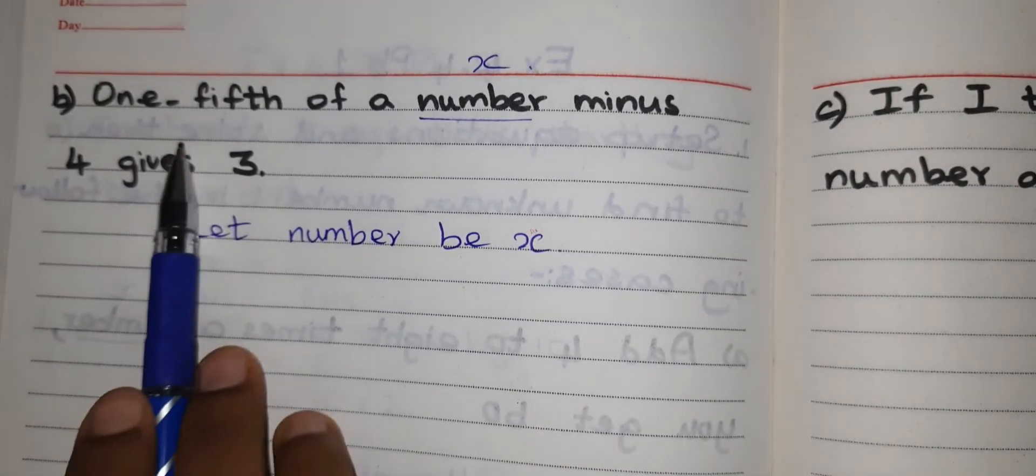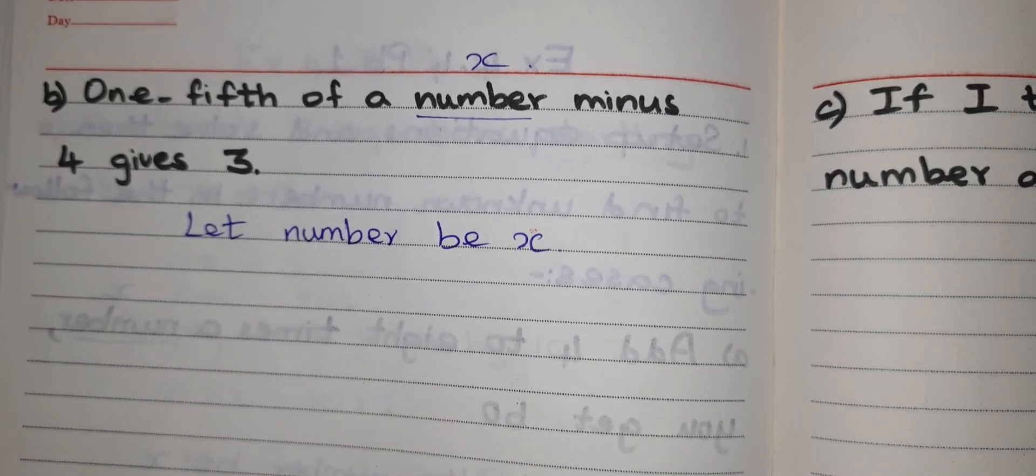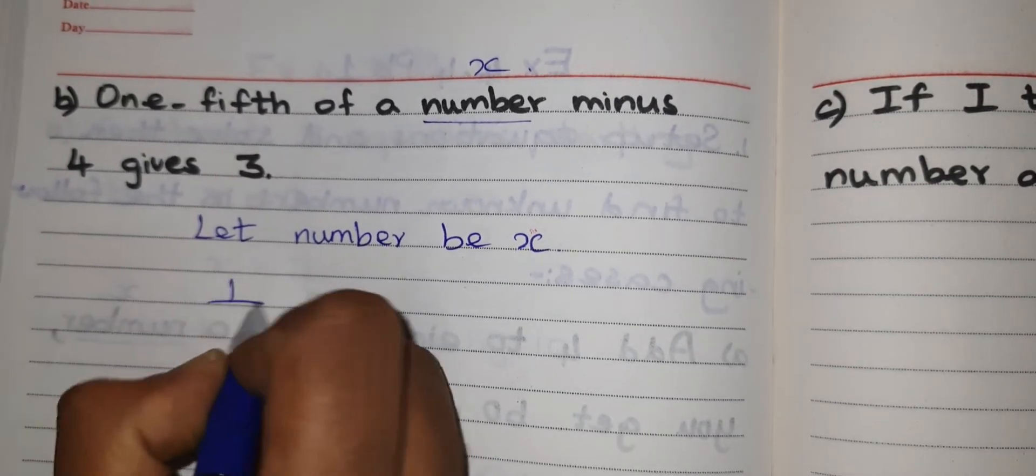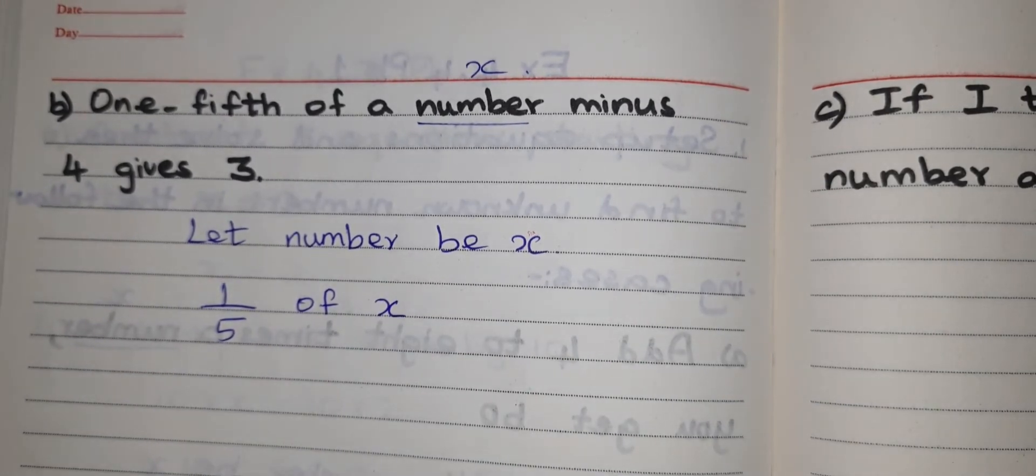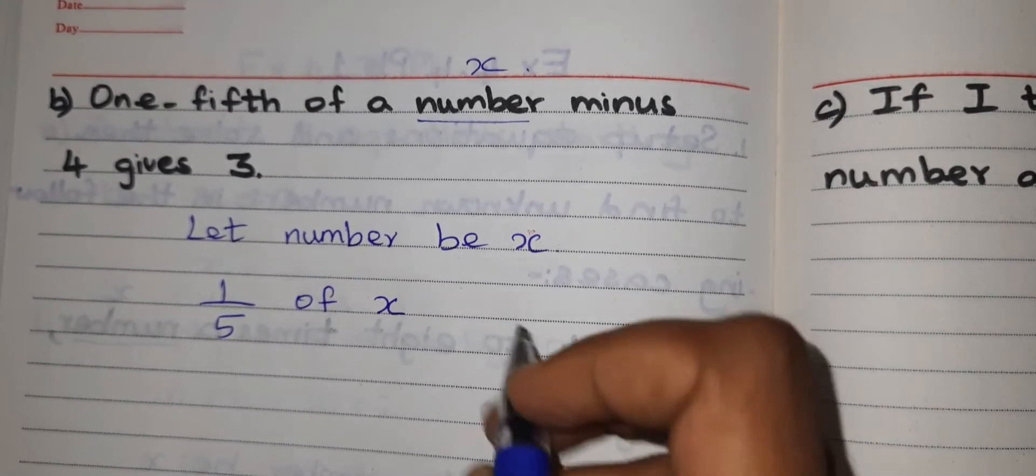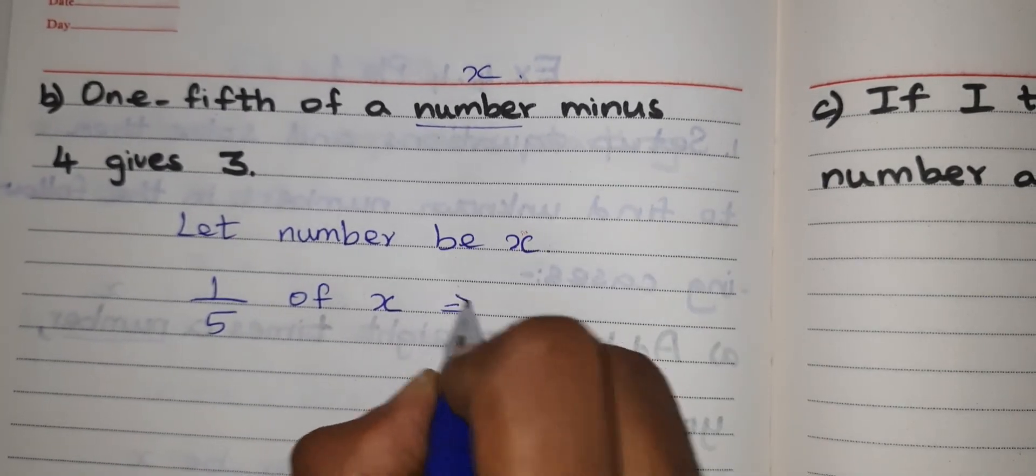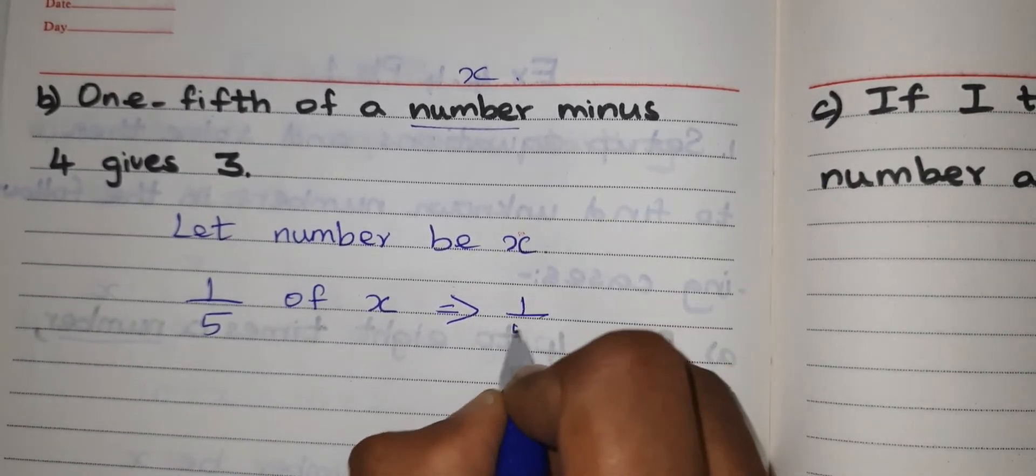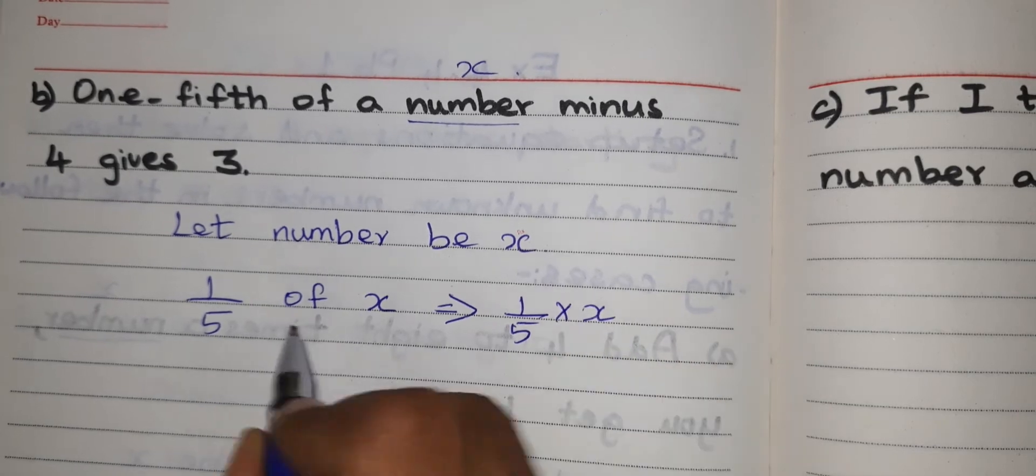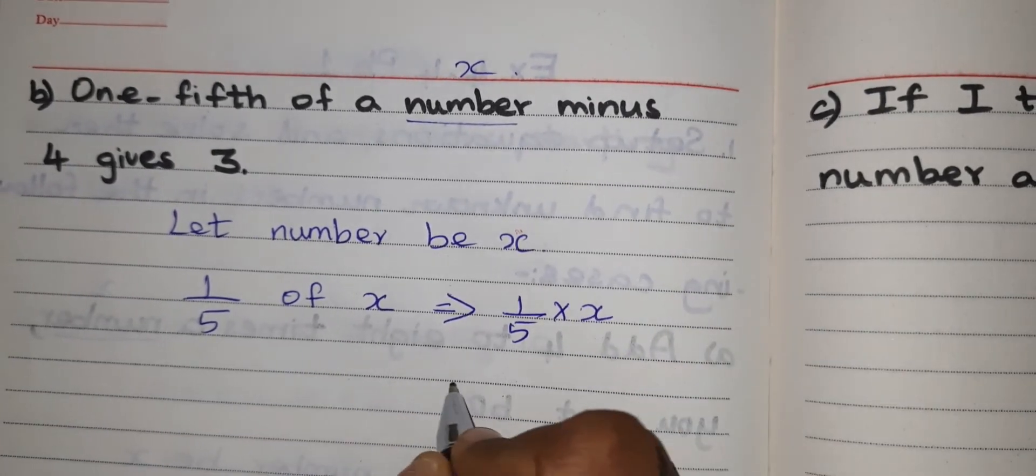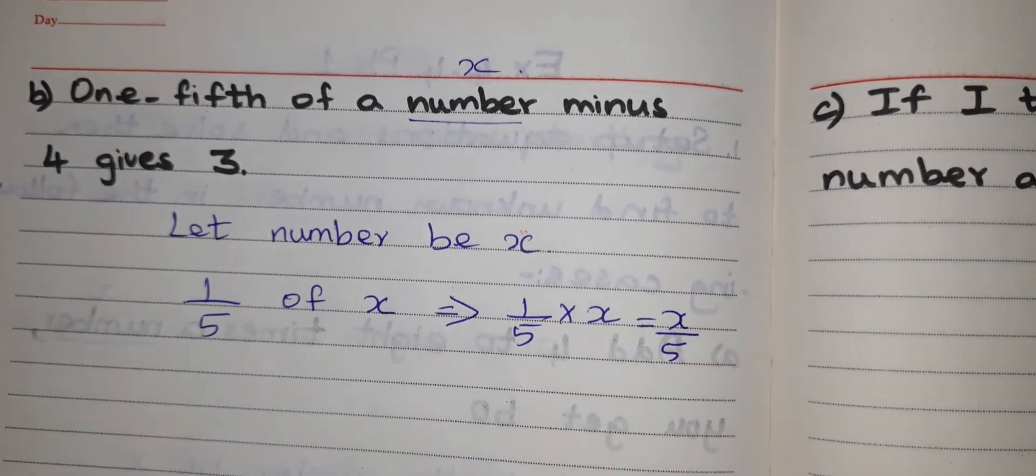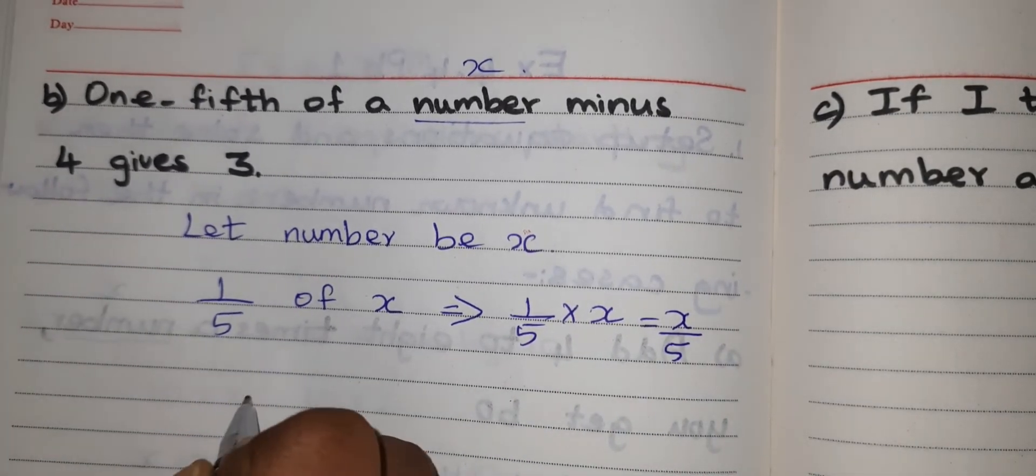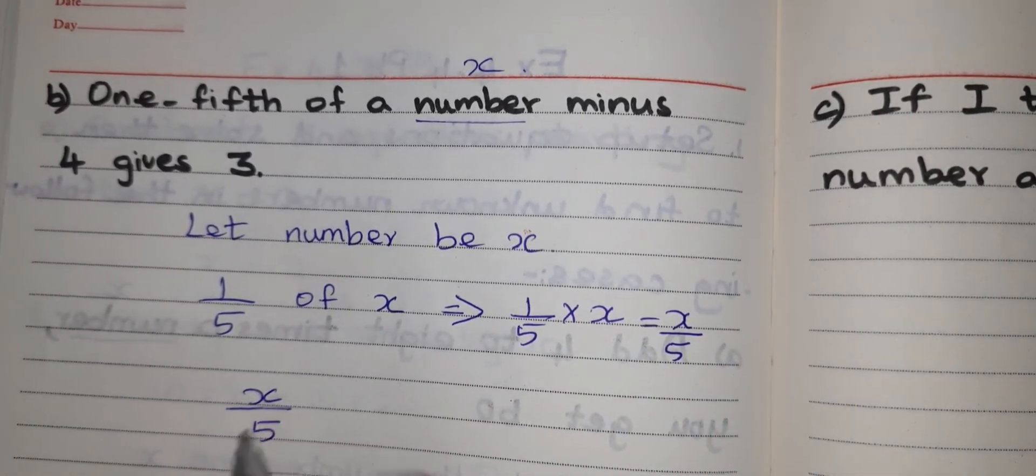Next, one-fifth of a number. One-fifth of a number means 1 by 5 of X. That is 1 by 5 into X, of means into. So it can be written as X by 5.